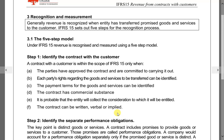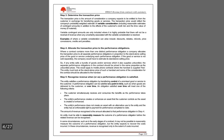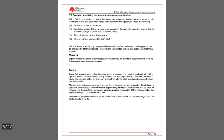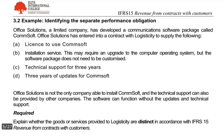Performance obligations can be more than one. For example, if I sign a contract with Maxis, we have a contract and the performance obligations include the handphone and the data — so more than one. In this example here we have four: the sale, the upgrading, the maintenance, and the technical support. These are four different performance obligations.